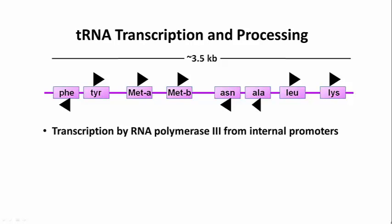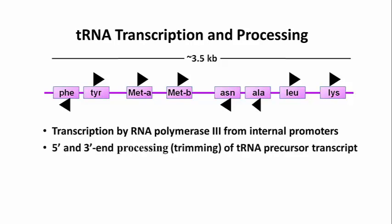Transfer RNAs are transcribed by RNA polymerase 3, again from internal promoters just like the 5S ribosomal RNA genes. The 5' and 3' ends of precursor transfer RNAs are trimmed — that is, there are extra nucleotides at the 5' and 3' ends that have to be removed before the transfer RNA is fully functional.